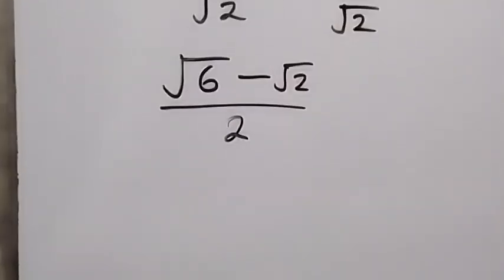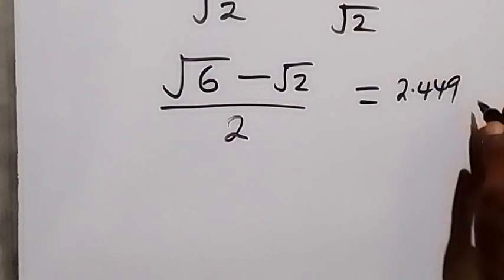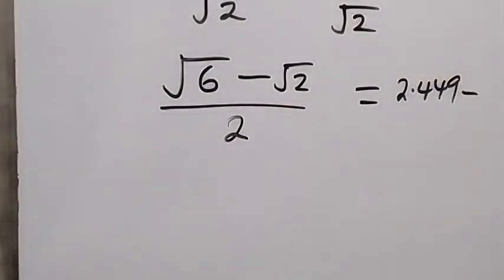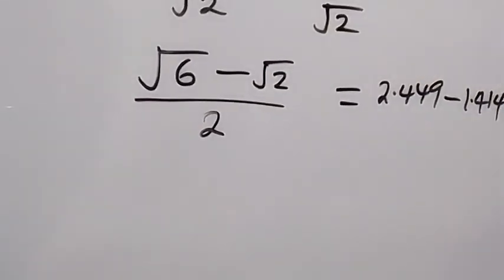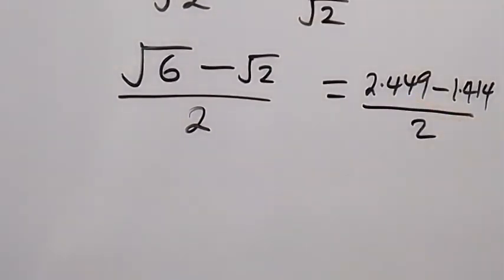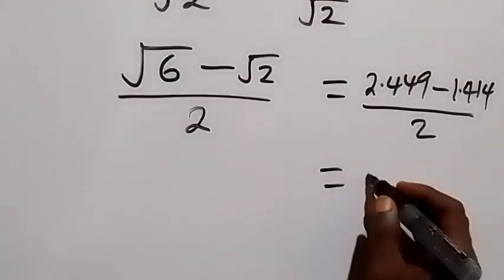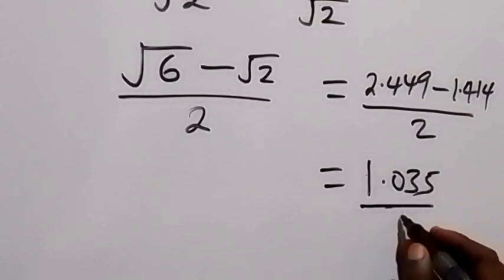And then from here we can also write it in decimal. Root 6 is 2.449, then minus root 2, we have 1.414, approximately, then divided by 2. So when we solve this from here, we subtract, we have 1.035 divided by 2.